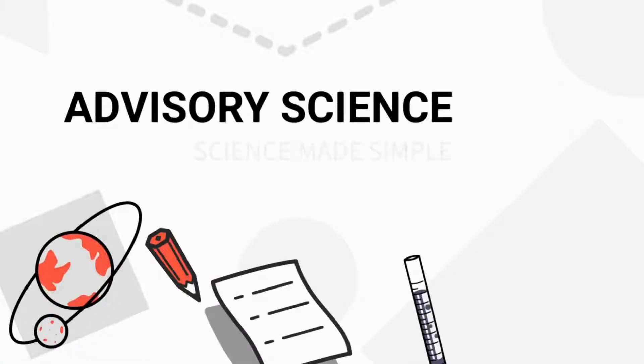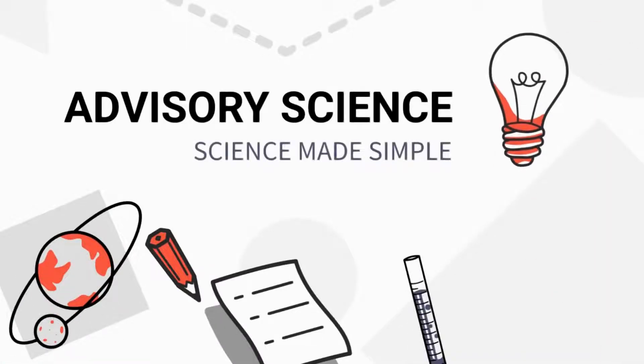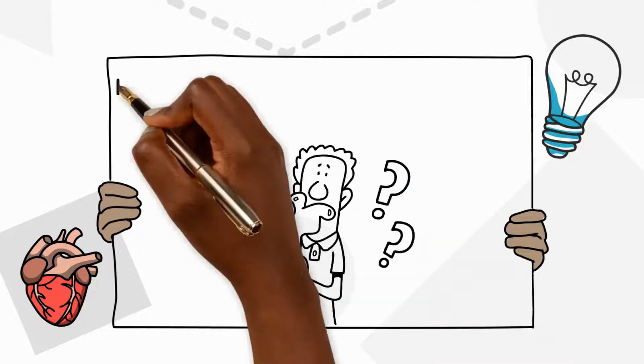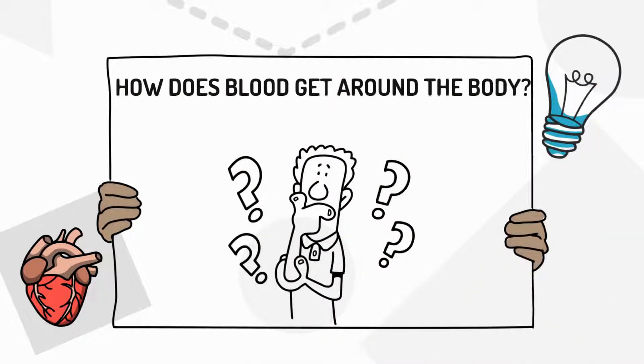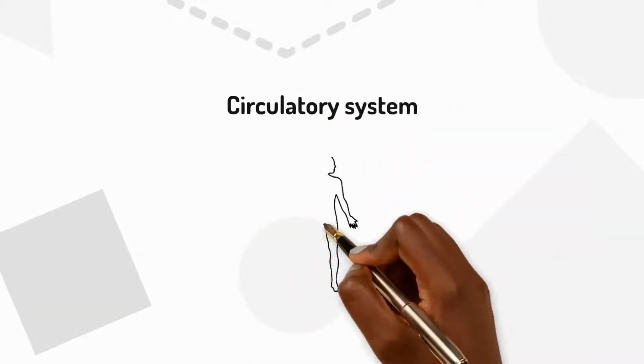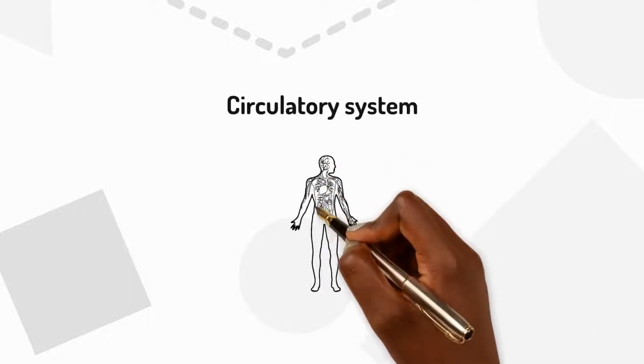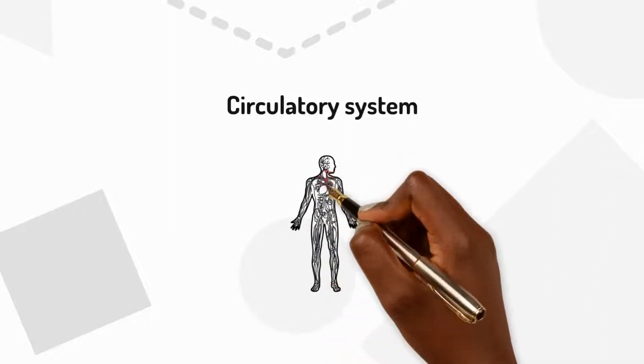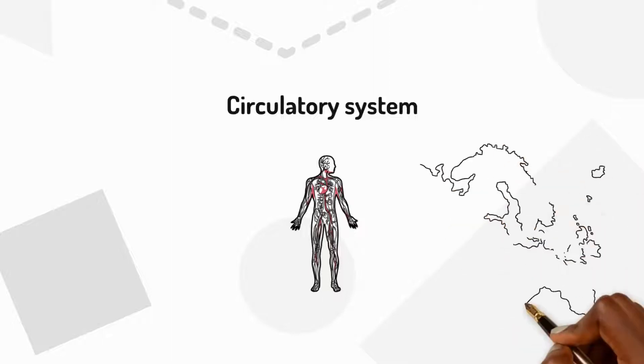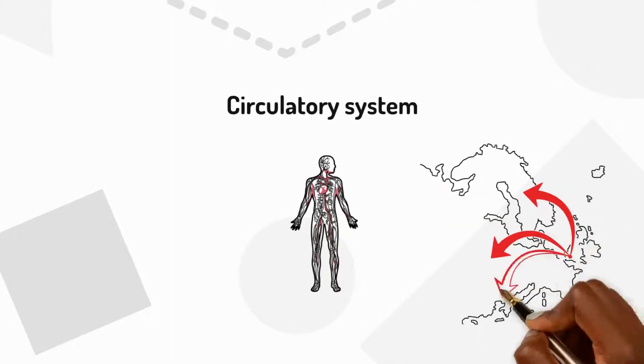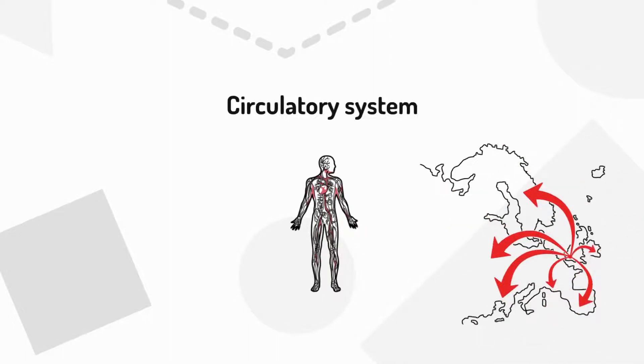Welcome to the Advisory Science Channel. How does blood get around the body? Our bodies are filled with blood vessels, which are tubes that carry blood. These vessels create a network, like roads on a map, allowing blood to travel to every part of our body.